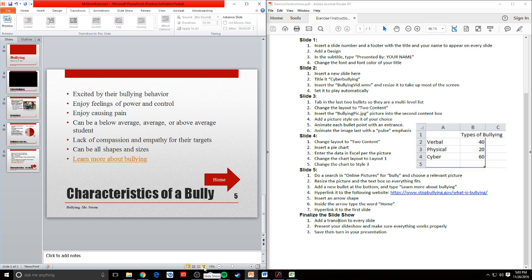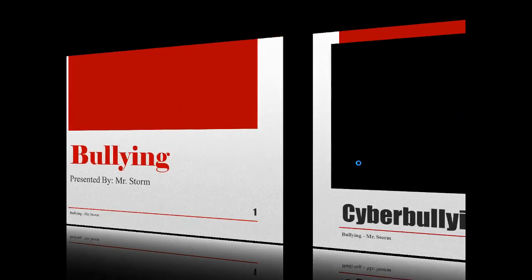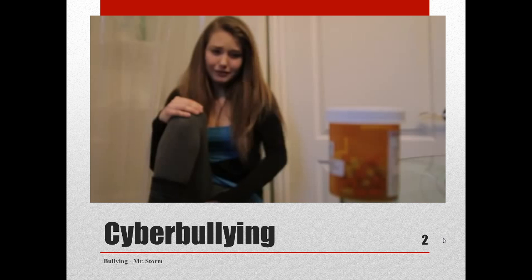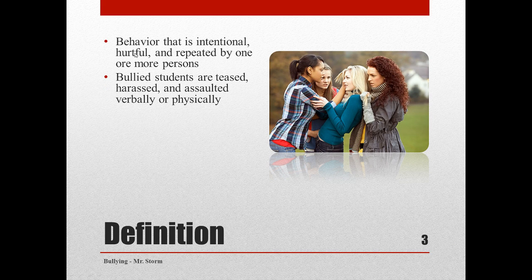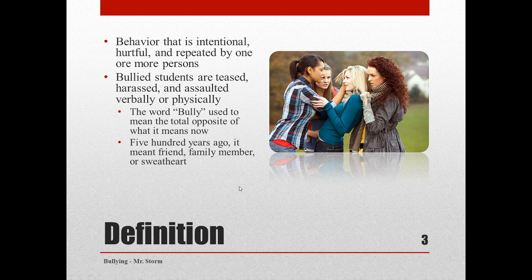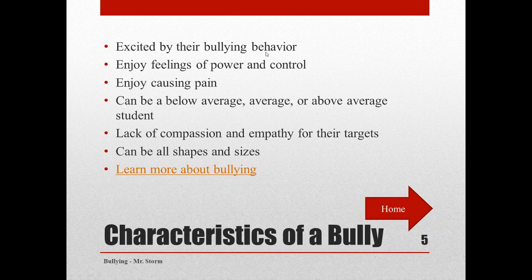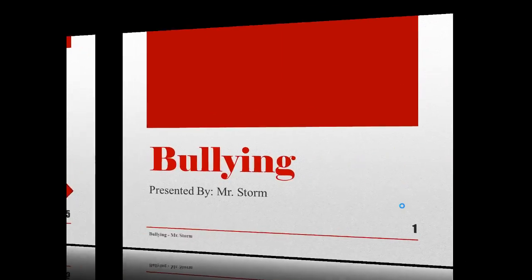I'm going to go through the slideshow step by step and make sure it looks good. Go back to the first slide and present. Bullying — presented by Mr. Storm — that looks good. The video on slide two plays automatically. Next slide — notice that my picture is already there but none of the bullet points are, because we added animations to those. When I click they fade in, and the final click makes the image pulse. Then I get my last slide, and I can click the hyperlink which takes me to the website. And clicking the arrow takes me back to the home slide. Everything looks like it works properly.